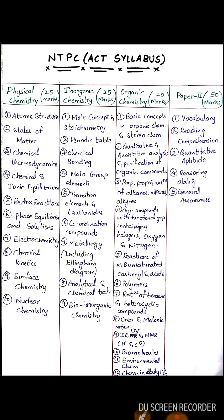Spectroscopy includes IR, UV, and NMR — in NMR it is ¹H NMR (proton NMR) and ¹³C NMR. Biomolecules include vitamins, proteins, lipids, amino acids, and carbohydrates. There is also environmental chemistry and chemistry in daily life. This completes the Paper 1 part covering physical, inorganic, and organic chemistry.